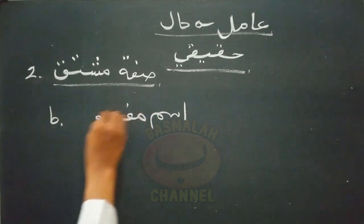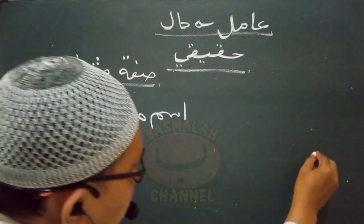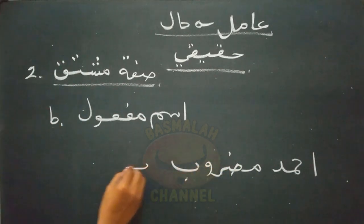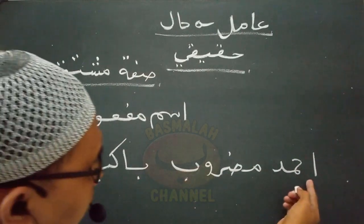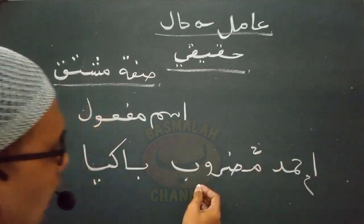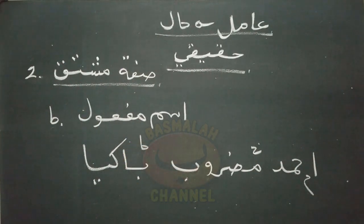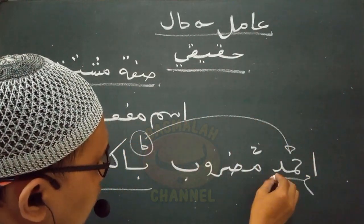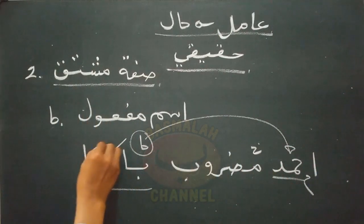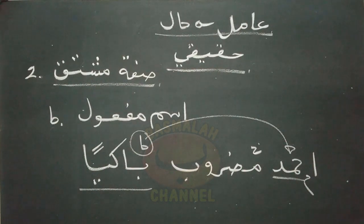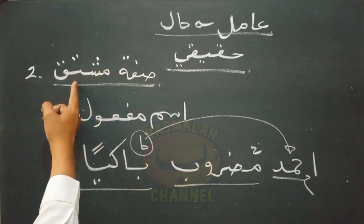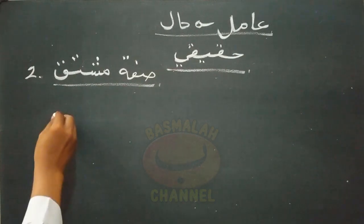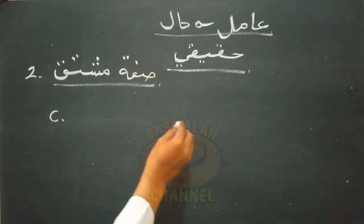Ada kalanya sifat mushtaq berupa isim maf'ul. Contohnya 'ahmadu madrubun bakian' - Ahmad ialah orang yang dipukul dalam keadaan menangis. Lafat bakian kedudukannya sebagai hal yang menjelaskan keberadaan daripada lafat ahmad sebagai sohibul halnya, dan wajib dalam keadaan nasob. Amil yang menasokkan kepada lafat bakian adalah lafat madrubun yang merupakan sifat mushtaq berupa isim maf'ul.